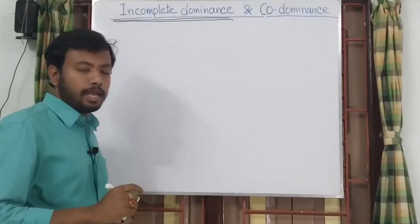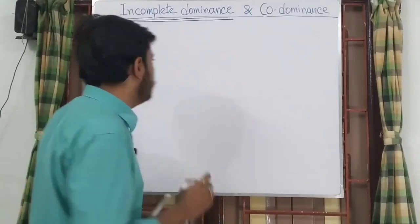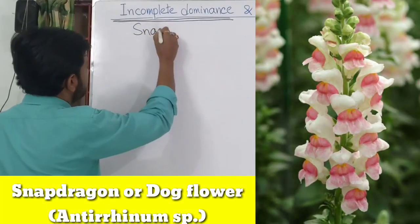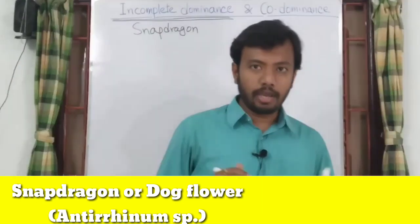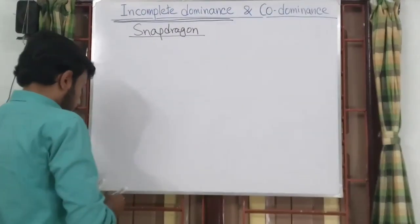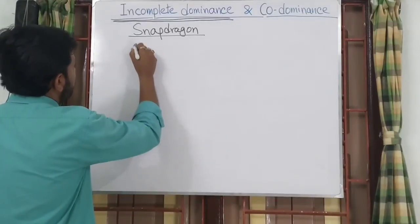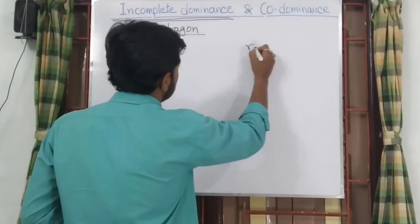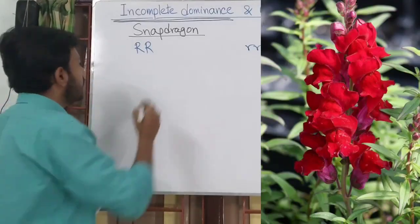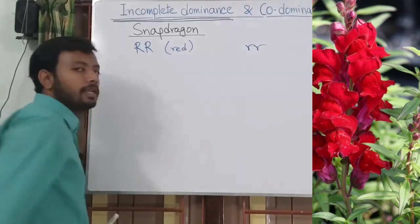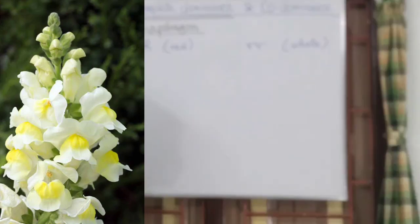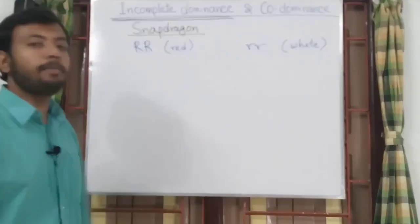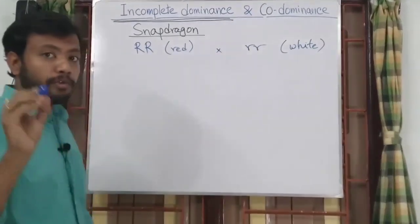A good example of incomplete dominance is found in the snapdragon flower, also known as the dog flower. Its scientific name is Antirrhinum. In the snapdragon flower we may find two variants: one is a homozygous red color flower, and another homozygous variant is white in color.